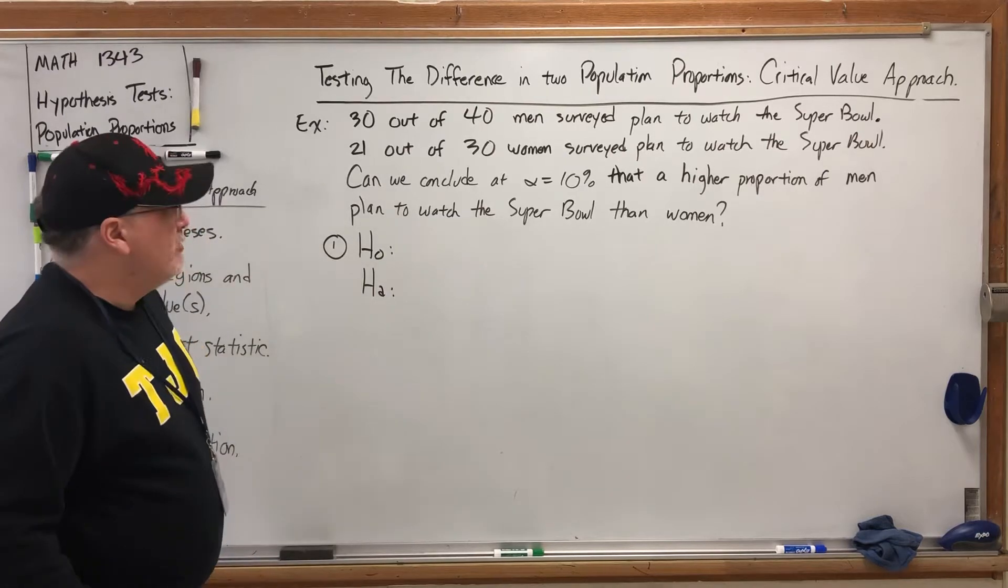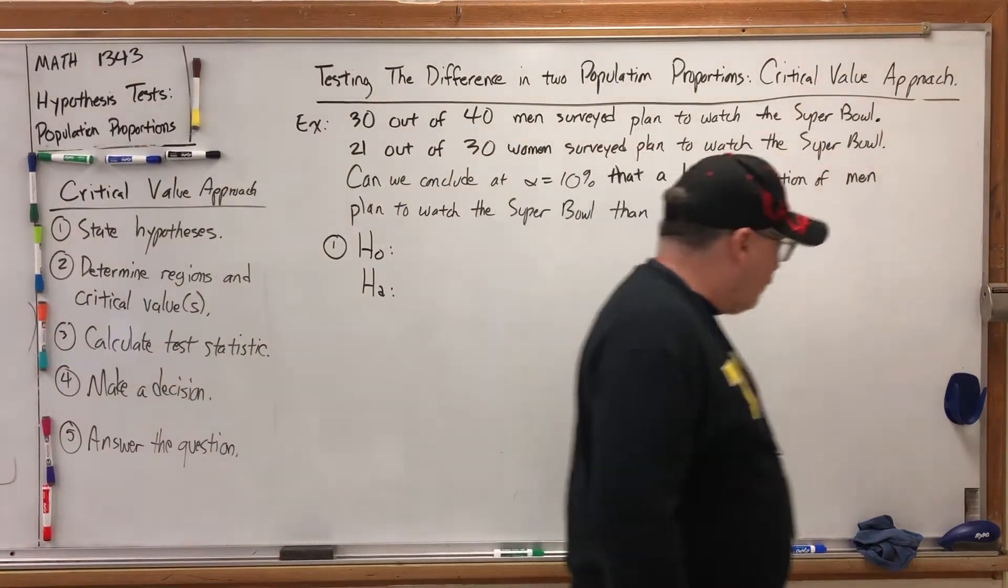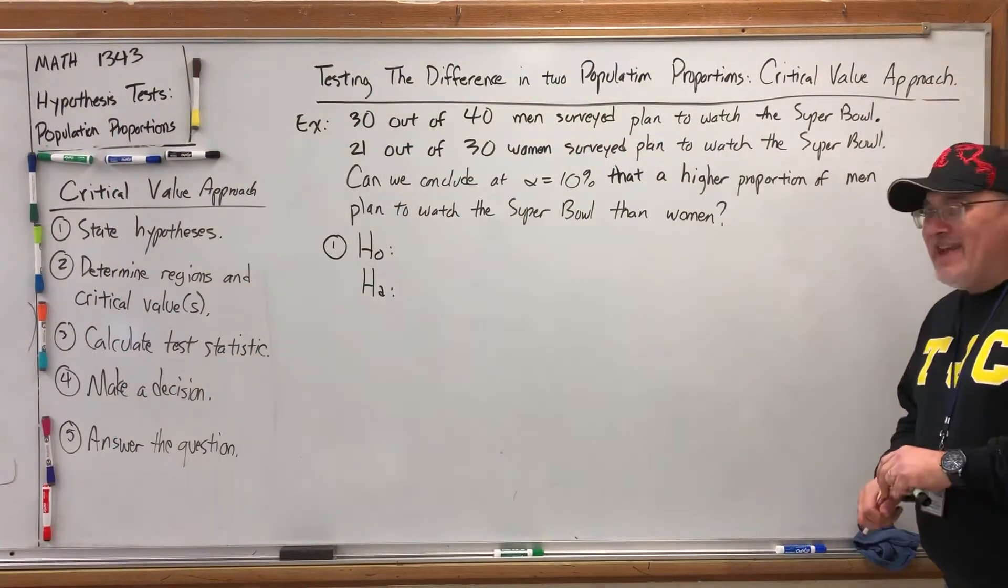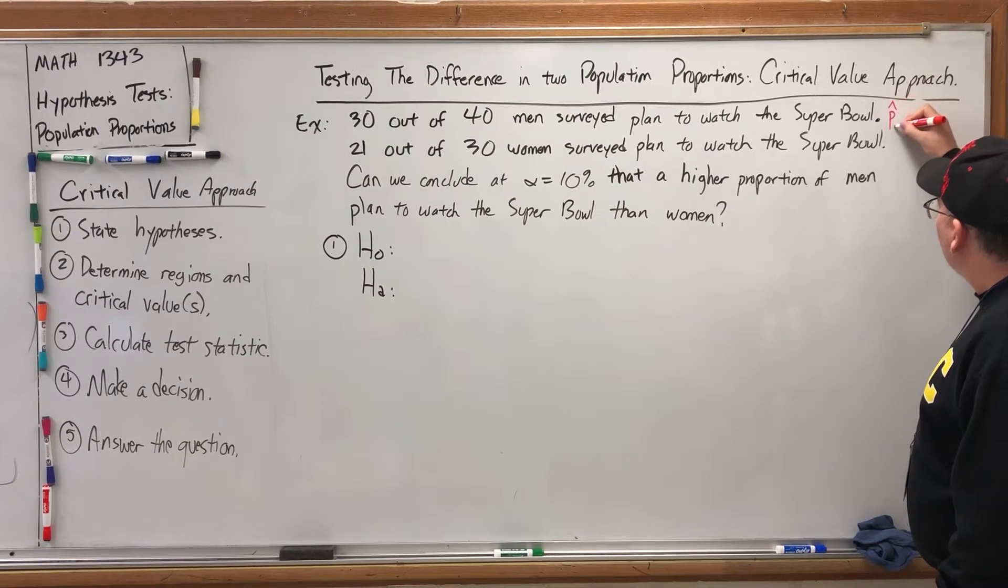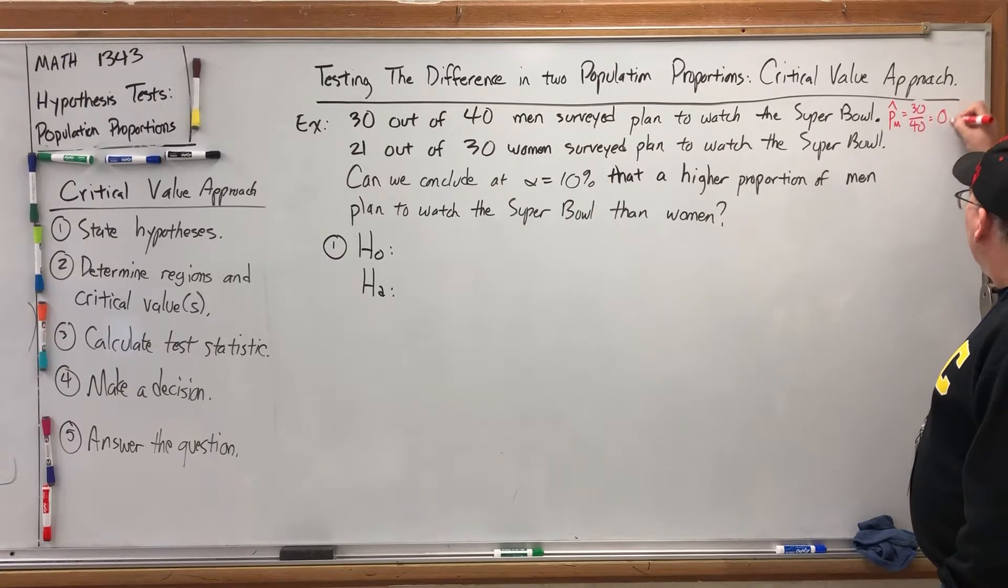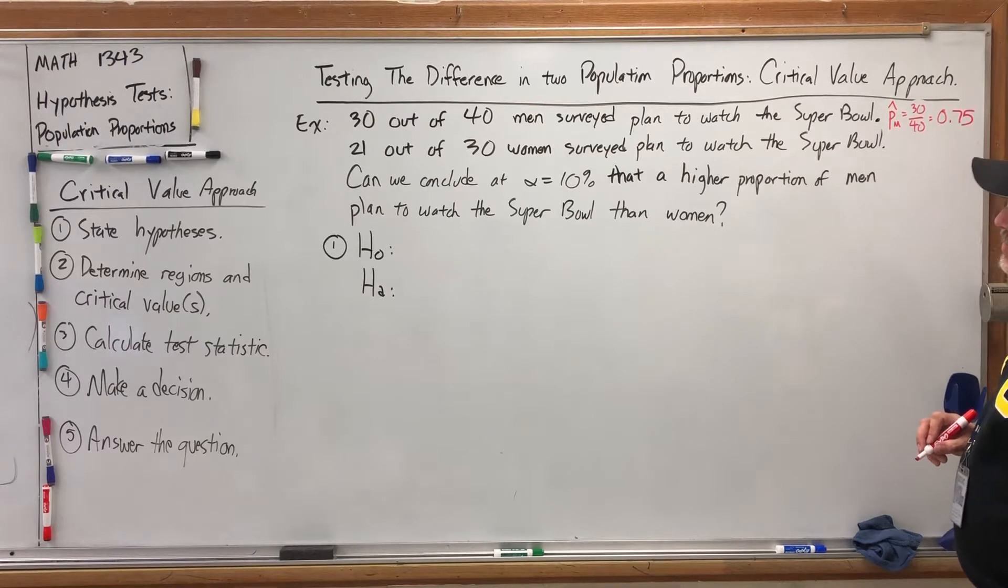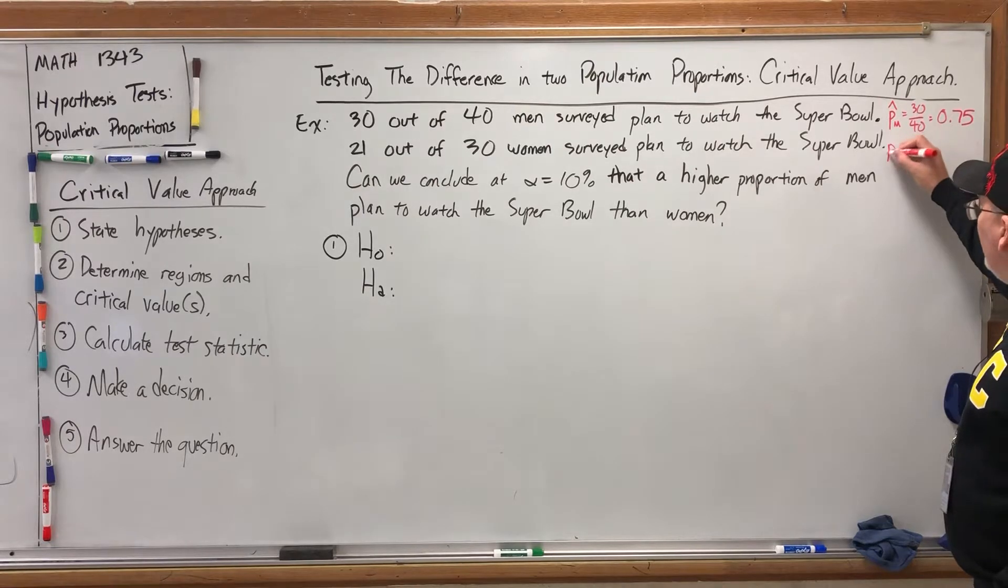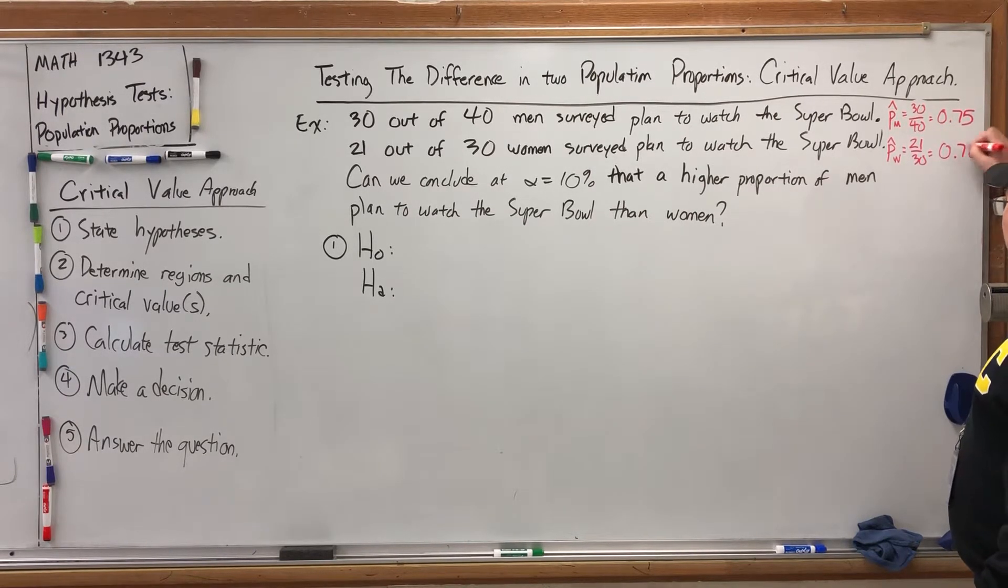So let's read the problem and figure out how to do this. 30 out of 40 men surveyed plan to watch the Super Bowl. Well, right away we were given information to calculate a p-hat value, a proportion of a sample. So let's go ahead and set that up. P-hat, we'll say p-hat m for men, is 30 out of 40, which is 75%. So there's one p-hat value. Next line. 21 out of 30 women surveyed plan to watch the Super Bowl. Well, that's also a sample of women, so we'll say p-hat w, and that's equal to 21 out of 30, which is exactly 70%. So we'll write 0.70.